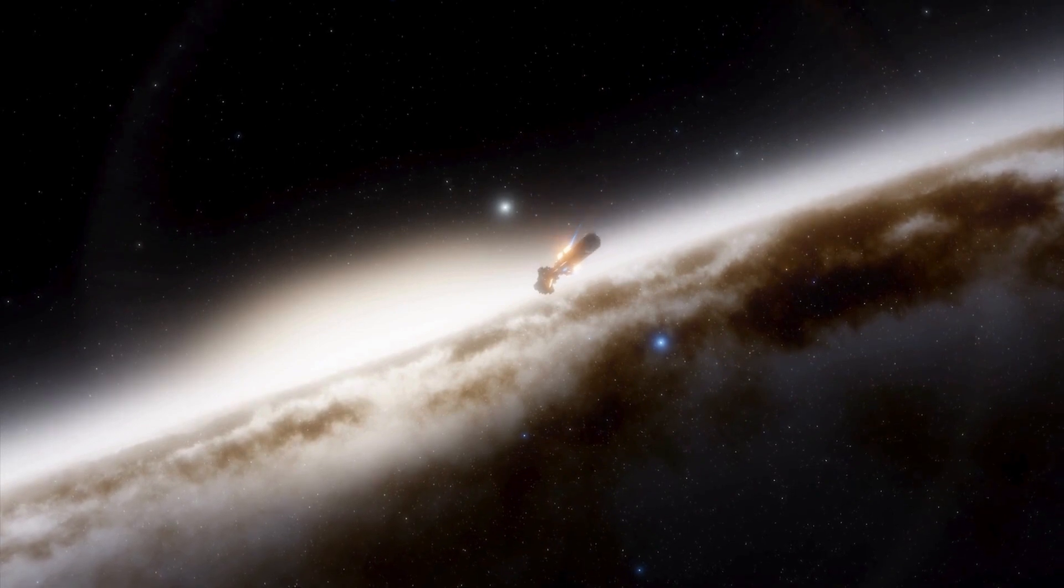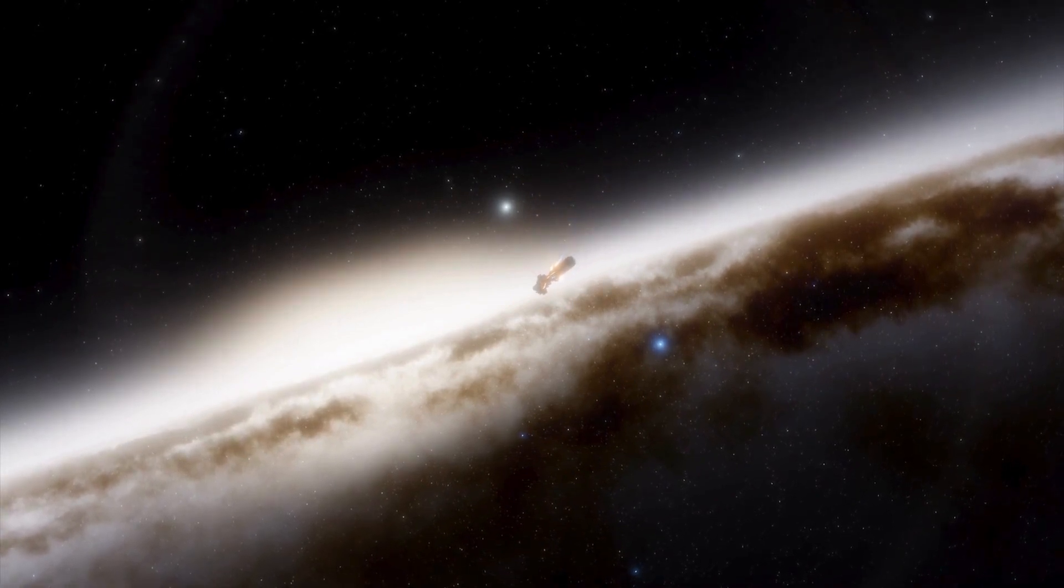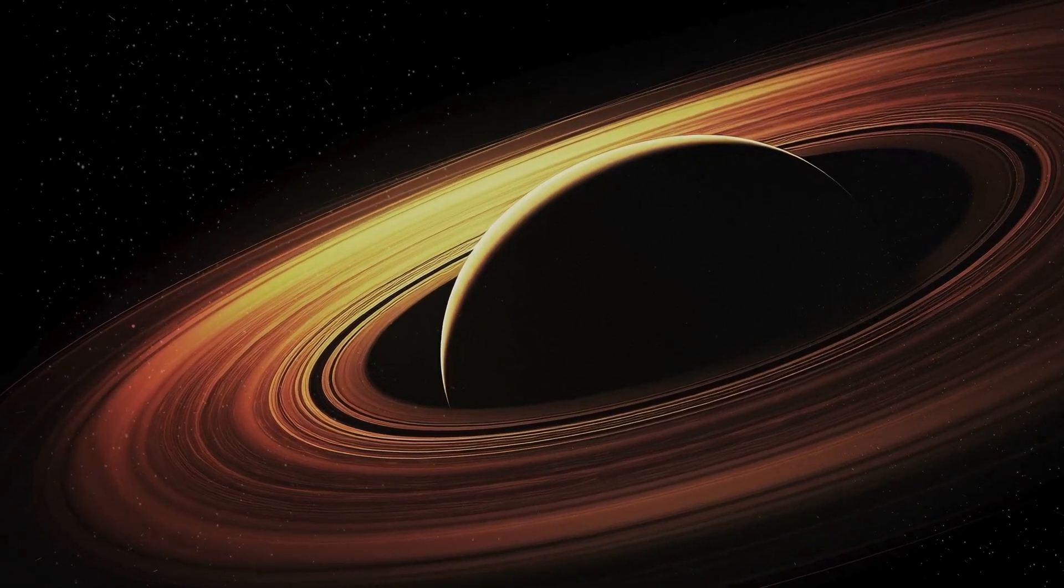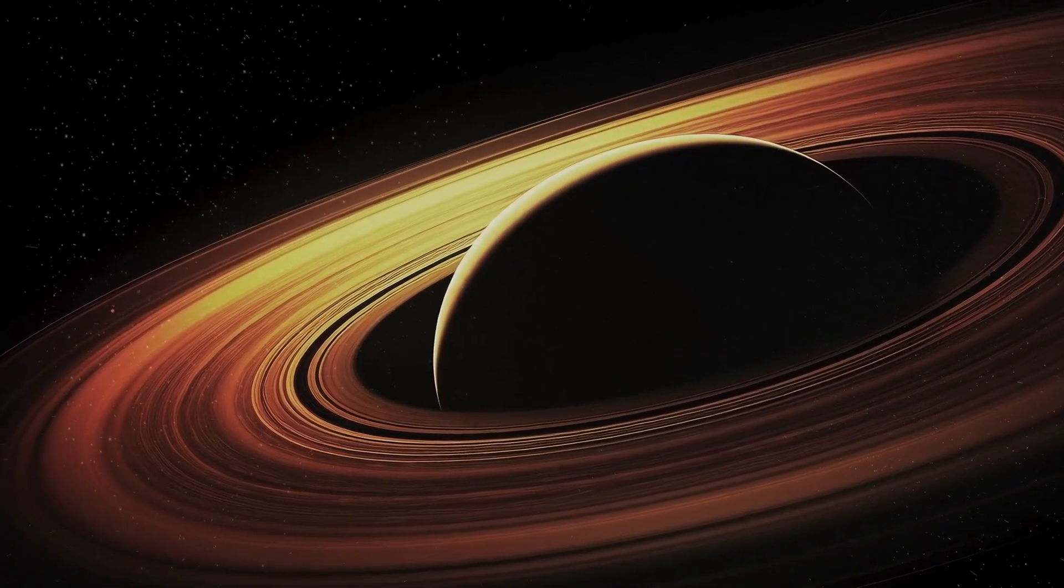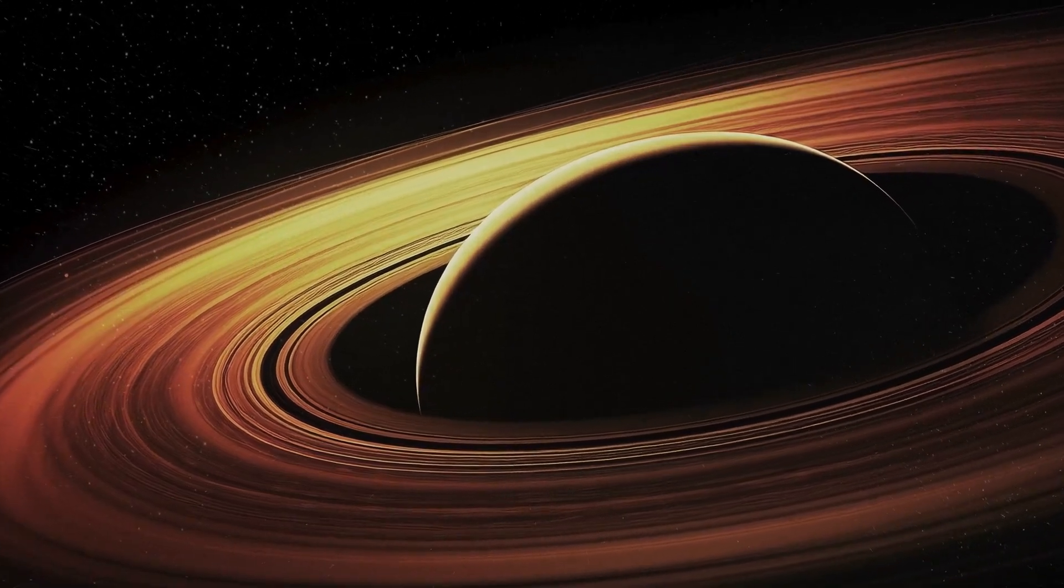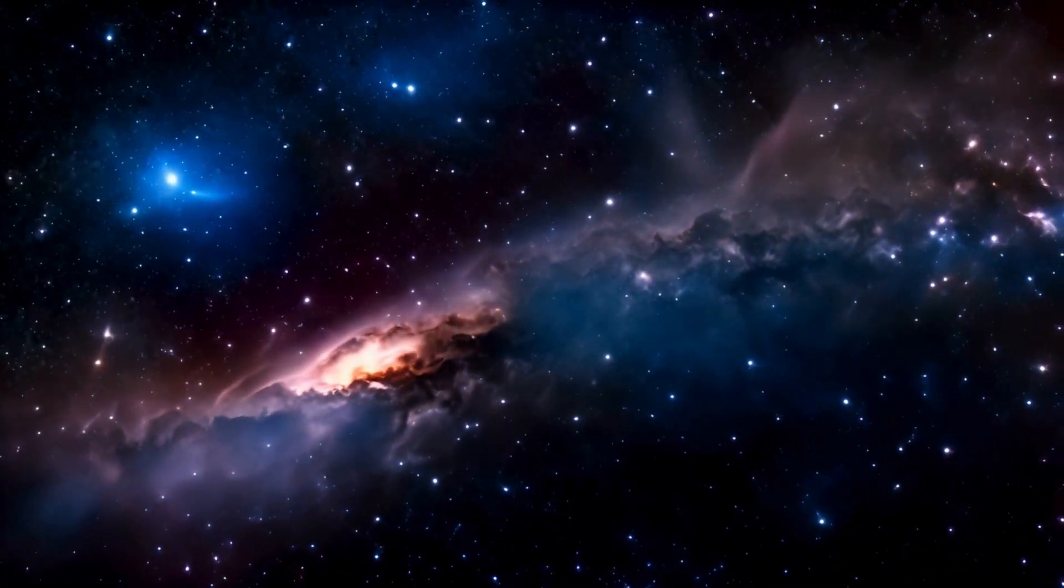The Milky Way contains approximately 300 billion stars, each of which likely has its own planetary systems. Our nearest neighboring star, Alpha Centauri, is 4.3 light years away, which means that if we were to travel at the speed of light, it would still take us 4.3 years to get there.